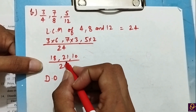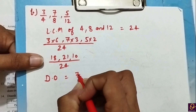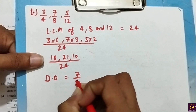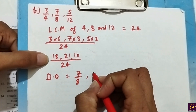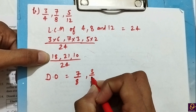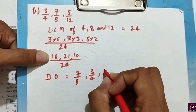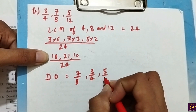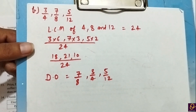In descending order: 21 comes first, that is 7 by 8; then 18, that is 3 by 4; and then 10, that is 5 by 12. Now see Part C.